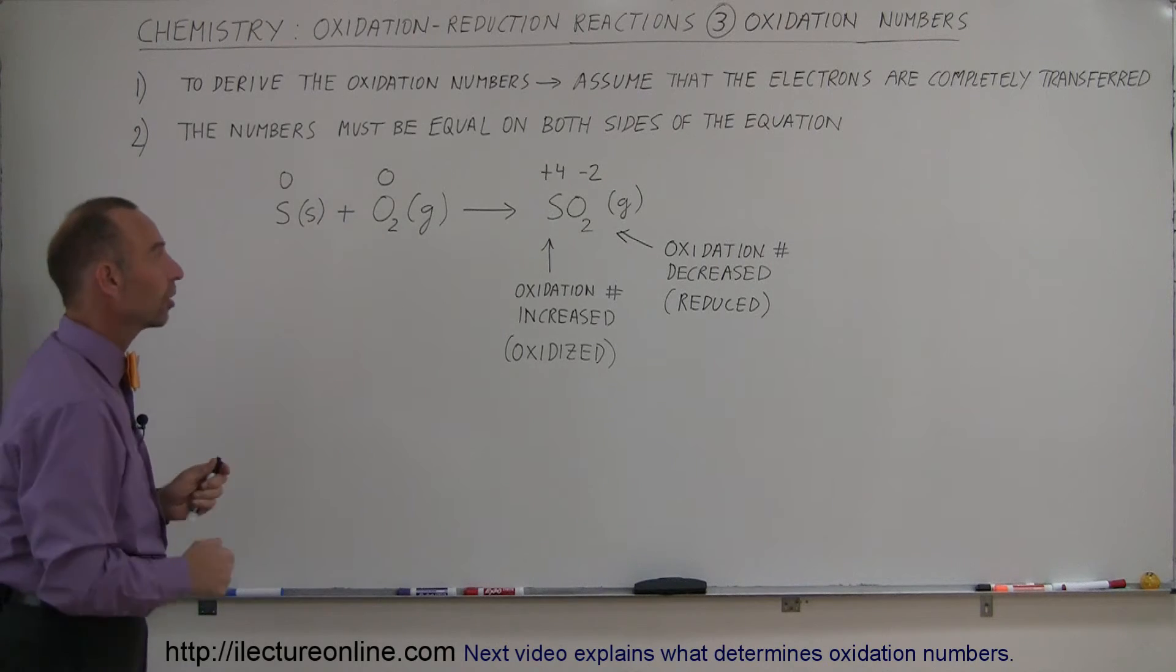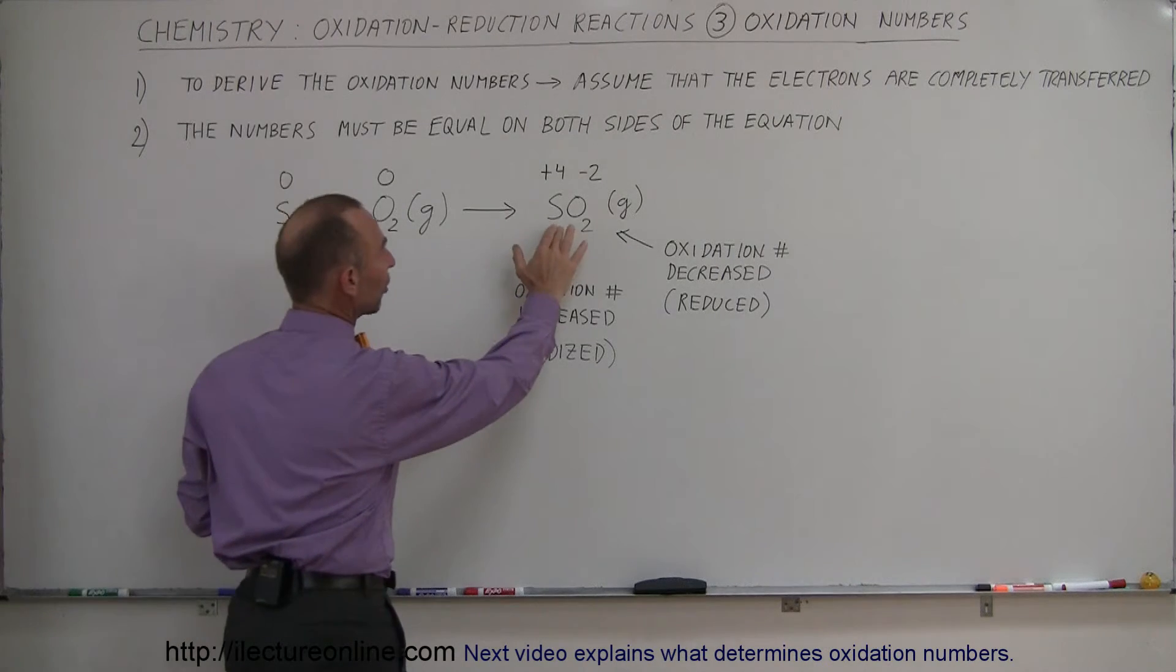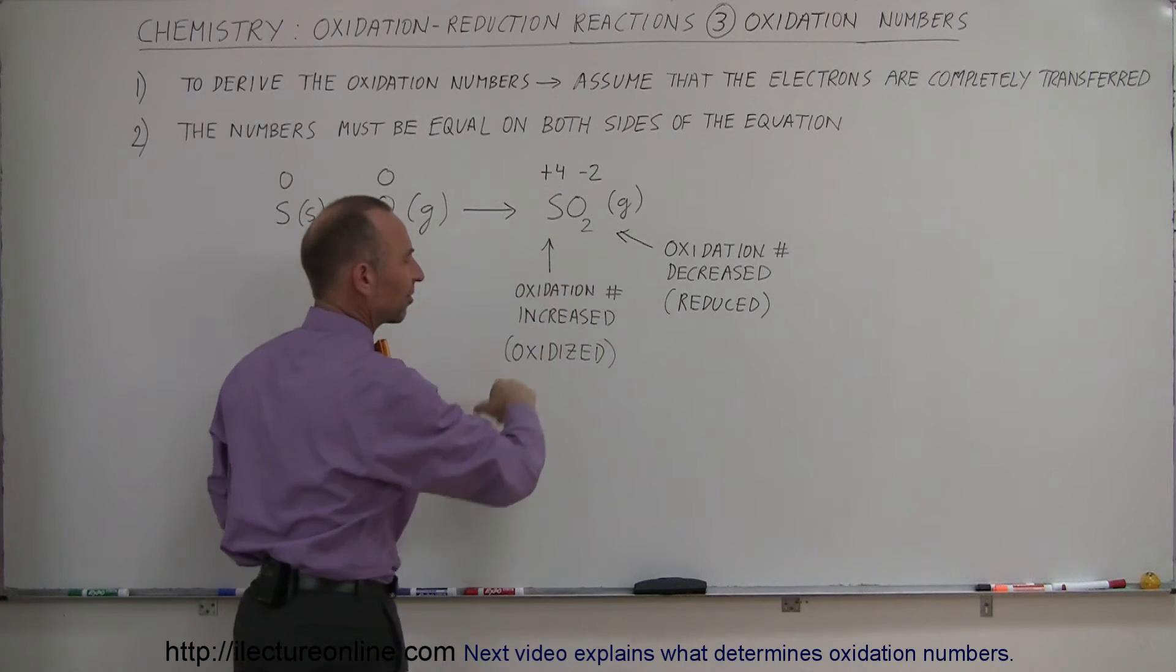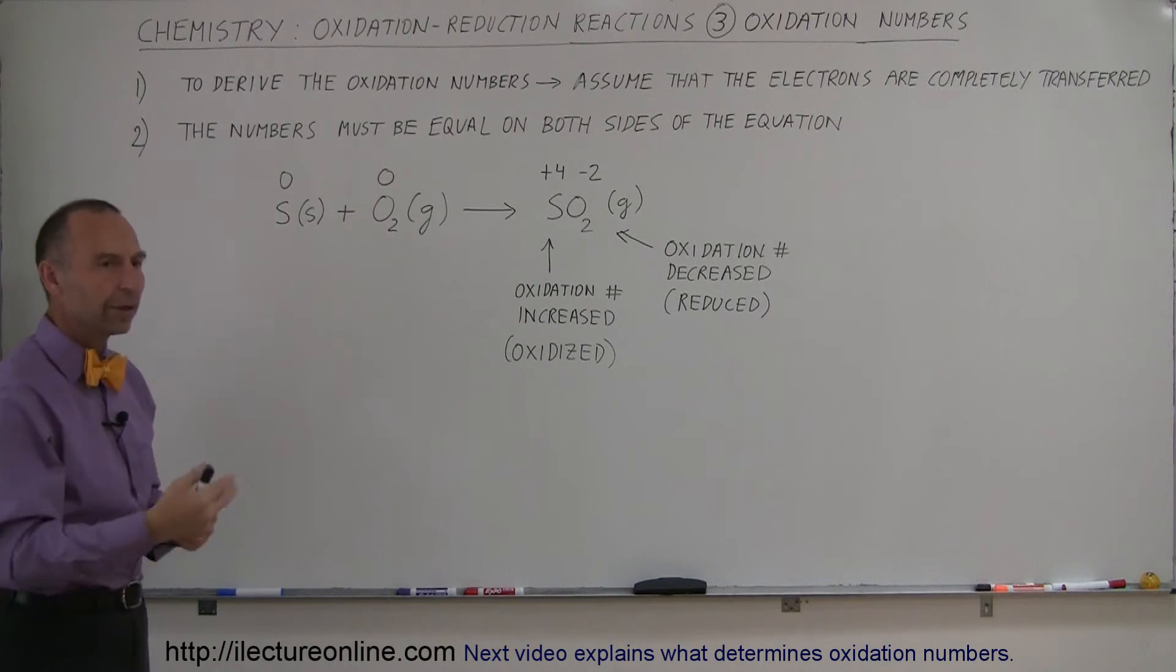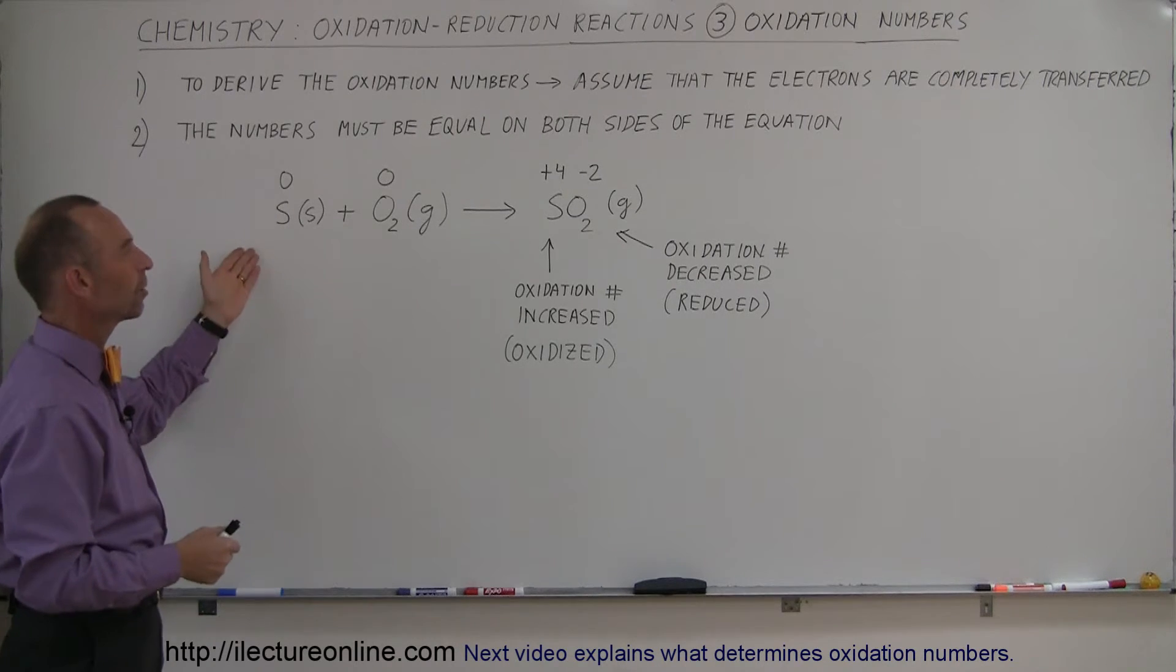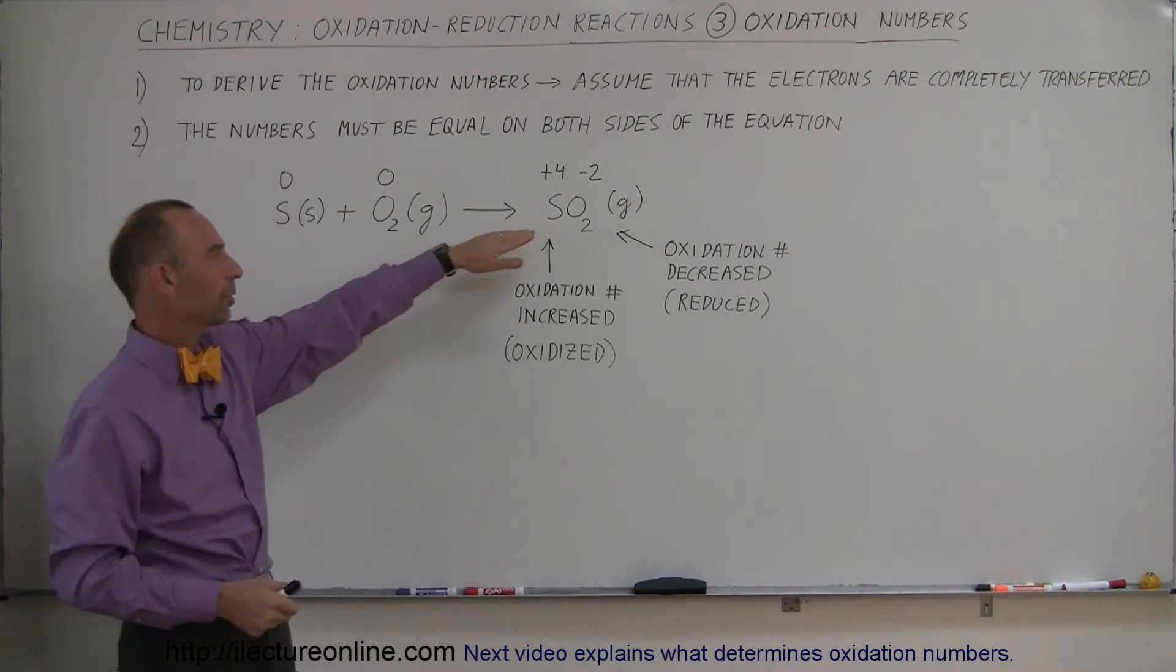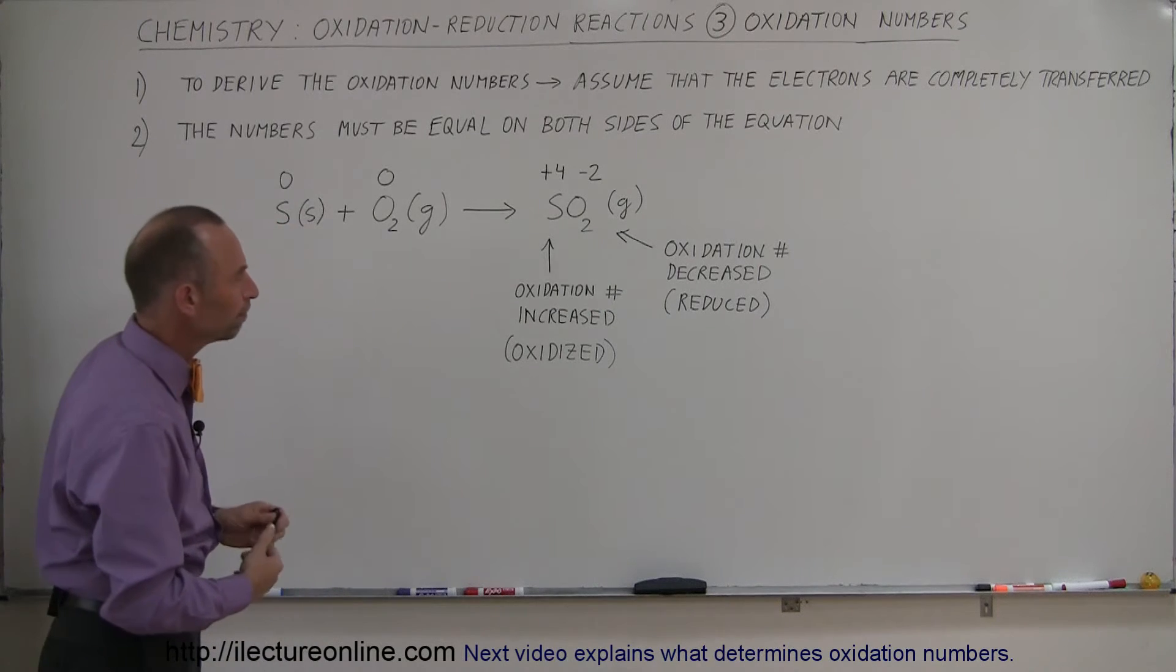Then they react with each other and the resulting product is sulfur dioxide, which is a gas that's usually a byproduct of pollution. When we burn gasoline in cars, sometimes there's a little bit of sulfur in the gasoline, and when we burn that off we get sulfur dioxide in the atmosphere - it's a pollutant.